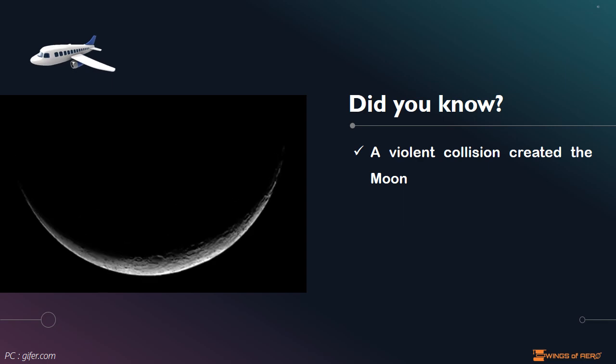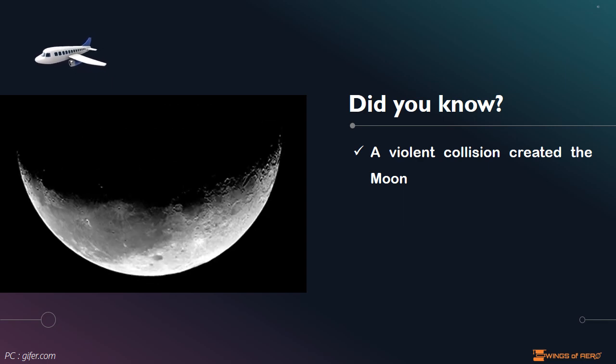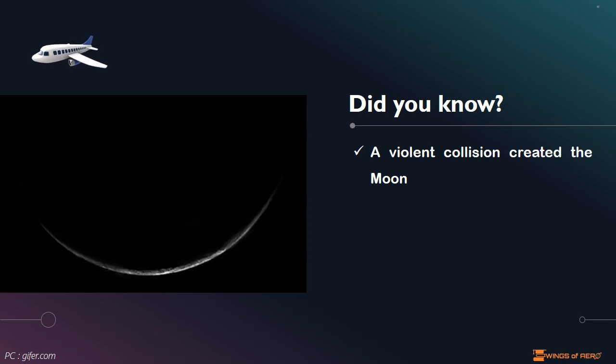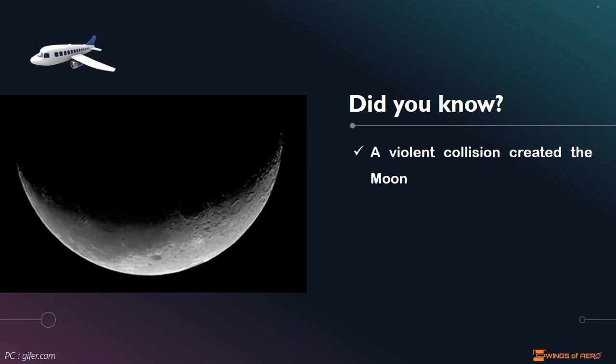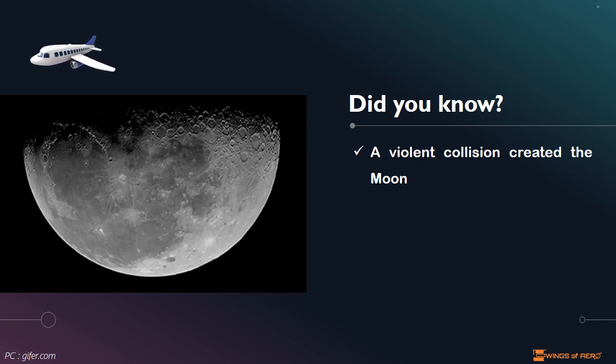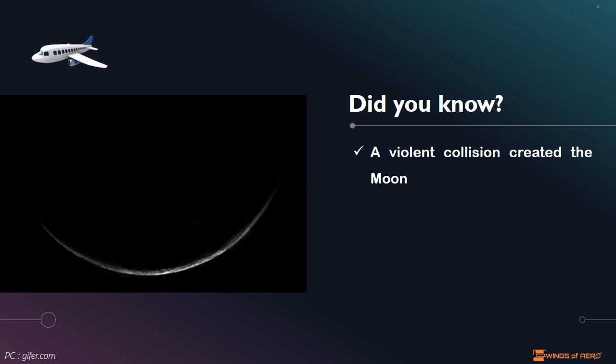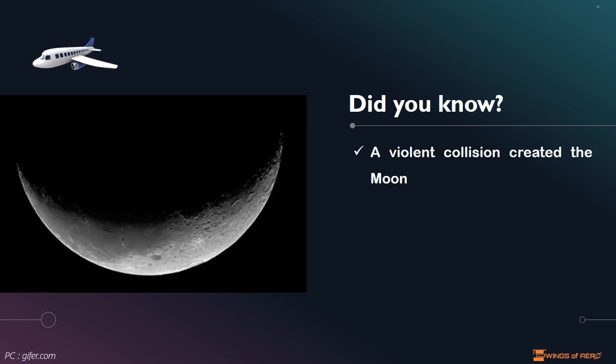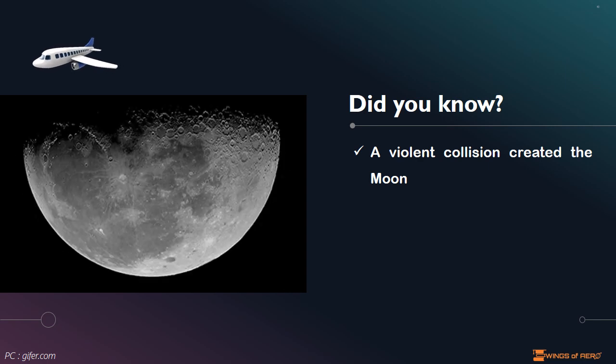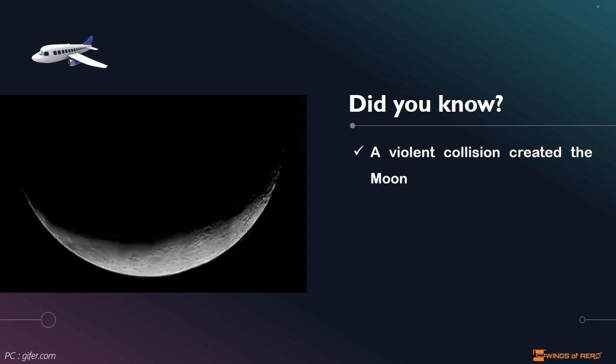Did you know a violent collision created the moon? The leading theory for how the moon was created is this: an object about the size of Mars smashed into Earth early in our planet's history, creating a bunch of debris that circled our planet. The debris came from both the Earth and the object, and over time the smaller bits stuck together and formed the moon that we see today. This story was arrived at once the Apollo astronauts brought back a few hundred pounds of rock from their missions by the way.